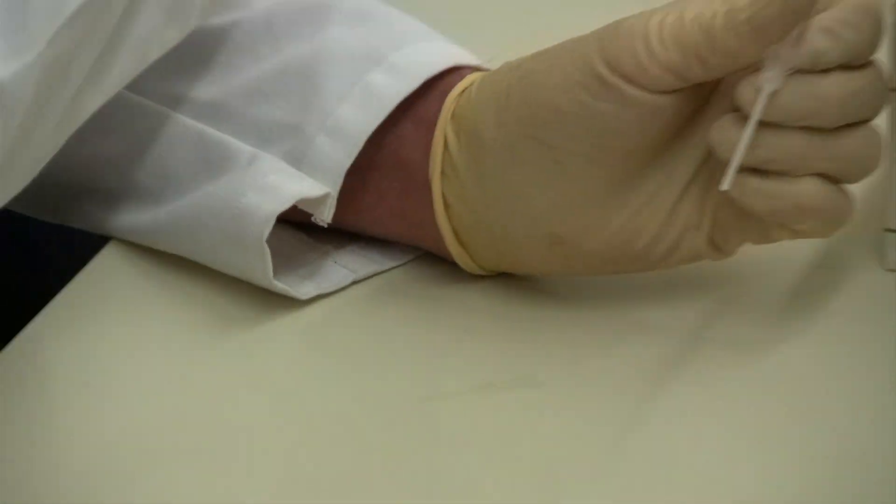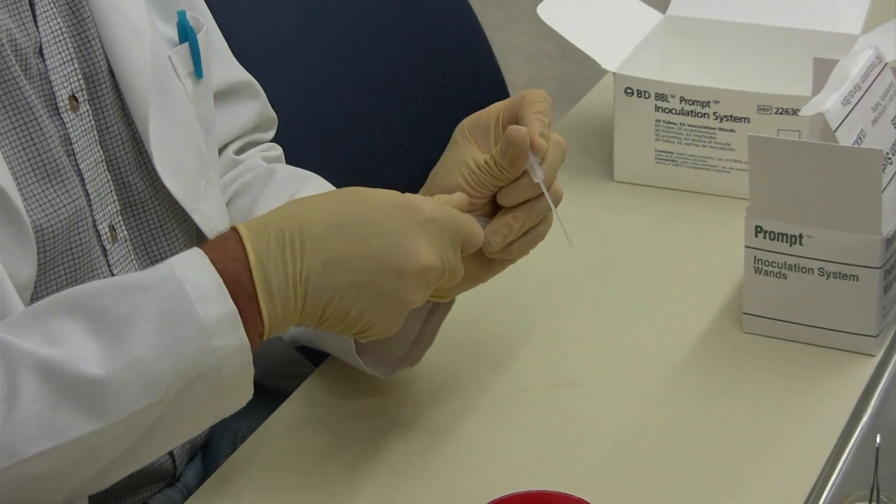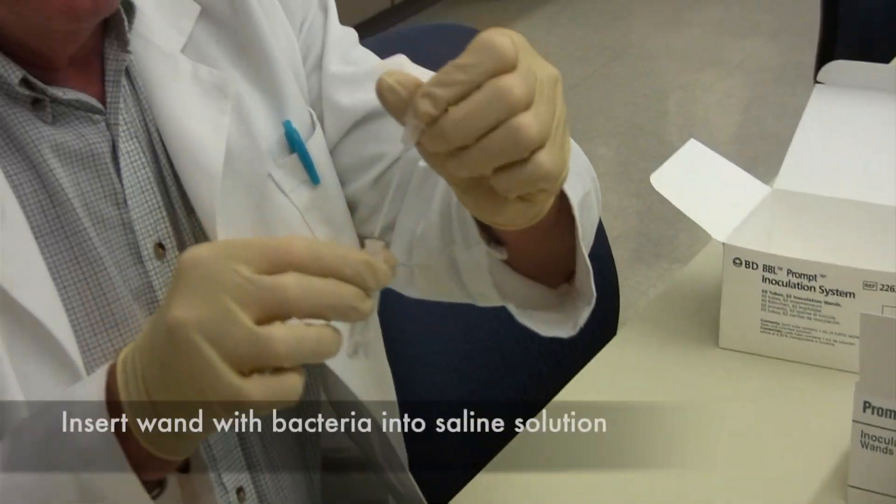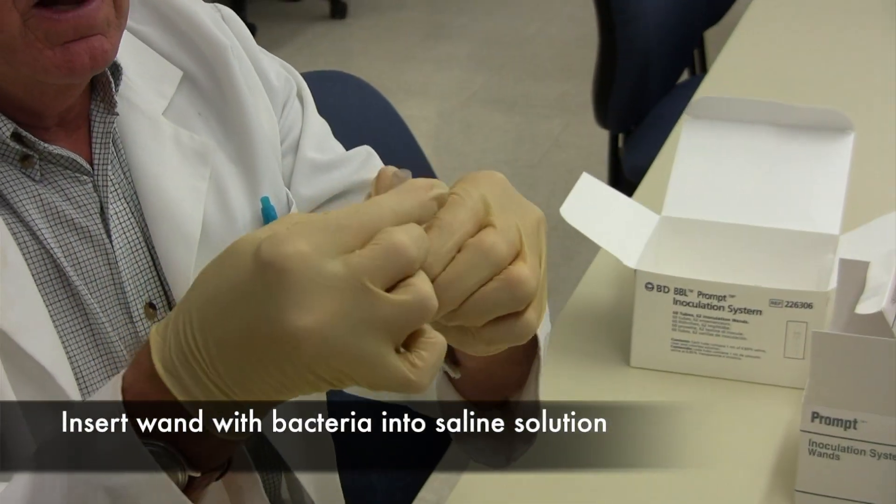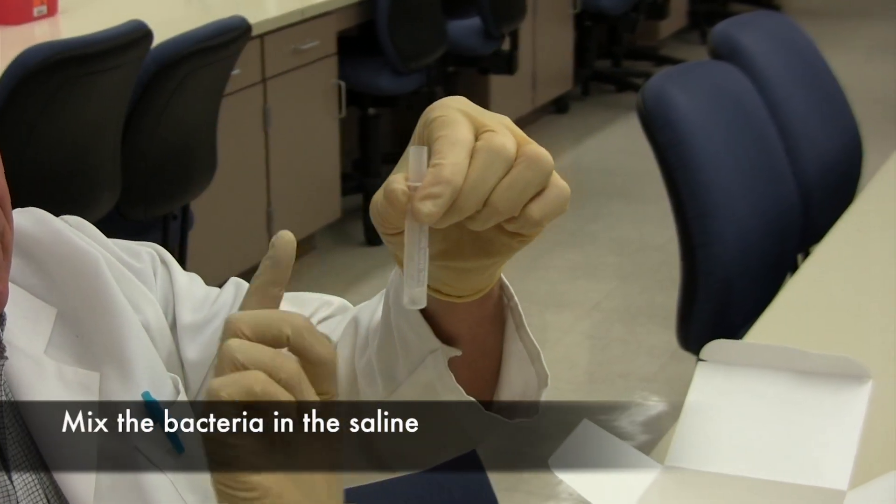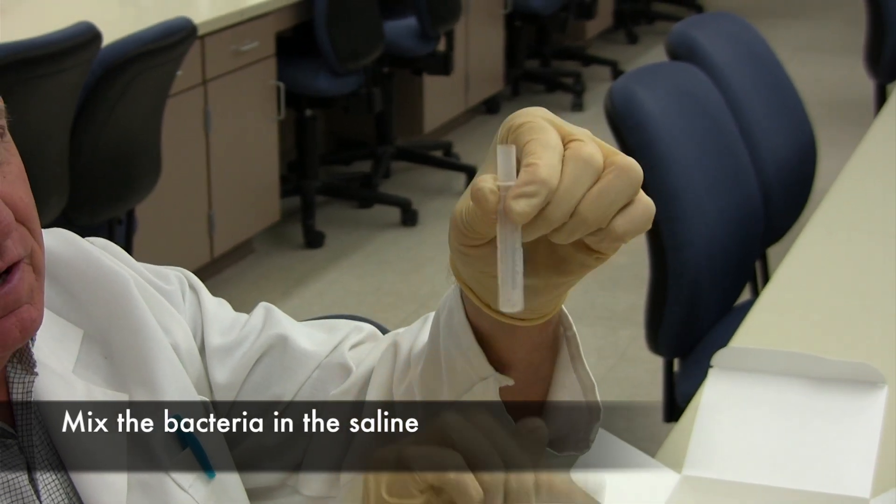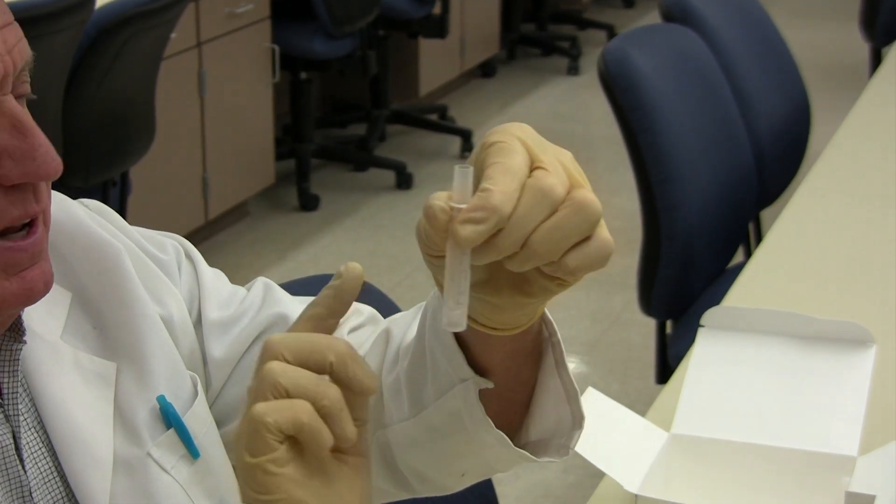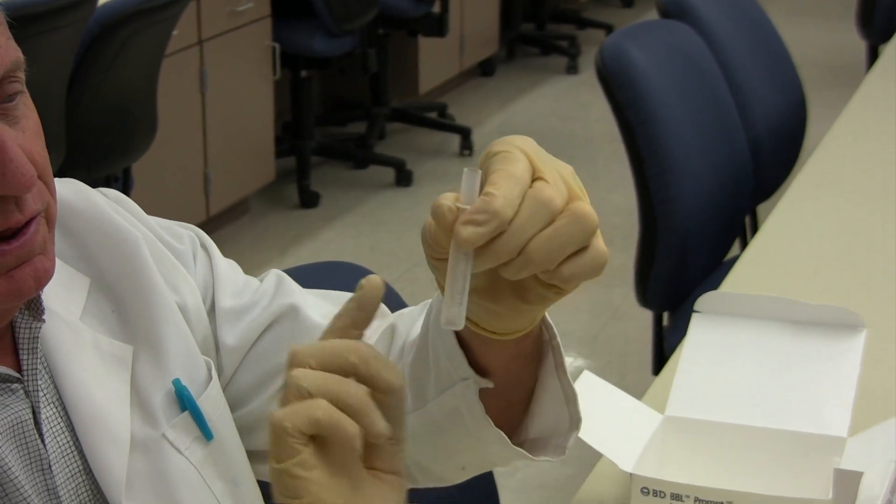Then take a saline blank, open it up, and insert the wand into the saline blank. Mix the bacteria into the saline by flicking the tube with your finger 10 or 15 times like so. That will give you the approximate turbidity that you want to use to inoculate the plate with.